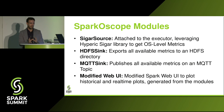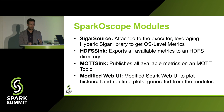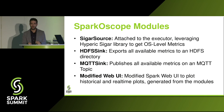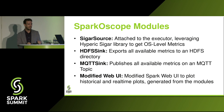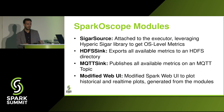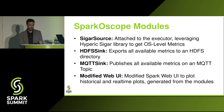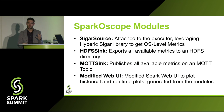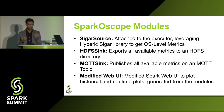Sparkoscope has several different modules. We developed the Cigar source, which is attached to the executor and leverages the open-source Cigar library for reporting OS-level metrics like RAM and CPU. We also have the HDFS sync, which exports all available metrics into an HDFS directory. One of the latest contributions is the MQTT sync, which publishes all available metrics to a specific MQTT topic. Finally, we modified the Web UI so you can plot historical and real-time data generated from all the above modules.